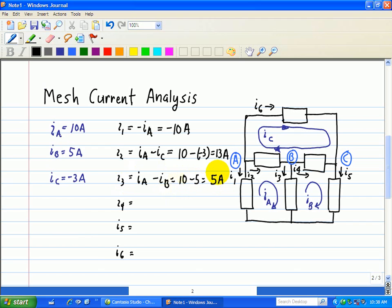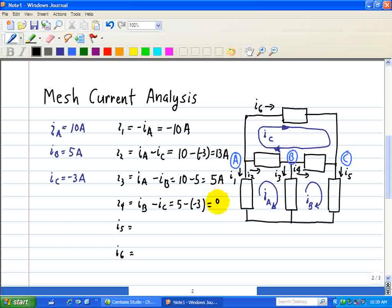We're going to follow the same process with the rest of the elements. I4, same direction as IB, and opposite direction of IC. So IB is 5, minus 3, that's the value of IC, which equals 8 amps.